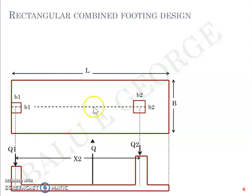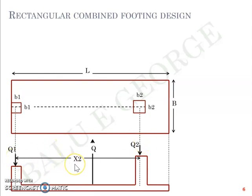Q1 plus Q2 is the total load Q acting vertically downward. What is marked in the figure is the reaction — the soil reaction offered on the rectangular combined footing slab due to Q1 and Q2 — so Q is marked upward as the reaction. X2 is the distance between the points of action of Q1 and Q2. The choice of rectangular combined footing applies when Q2 is greater than Q1, or we have the option to extend the slab on the heavier column side.